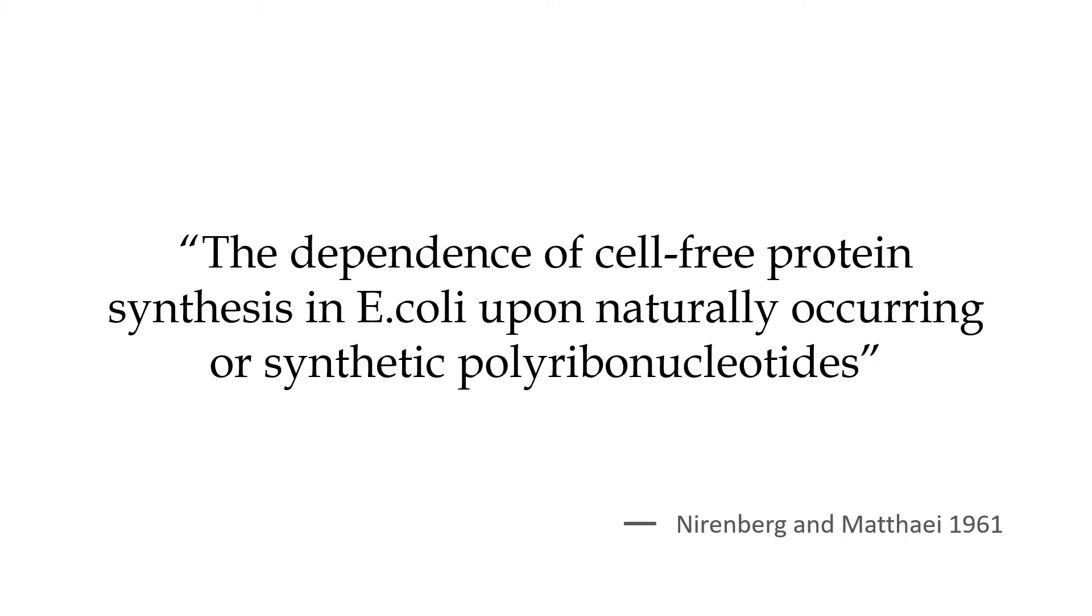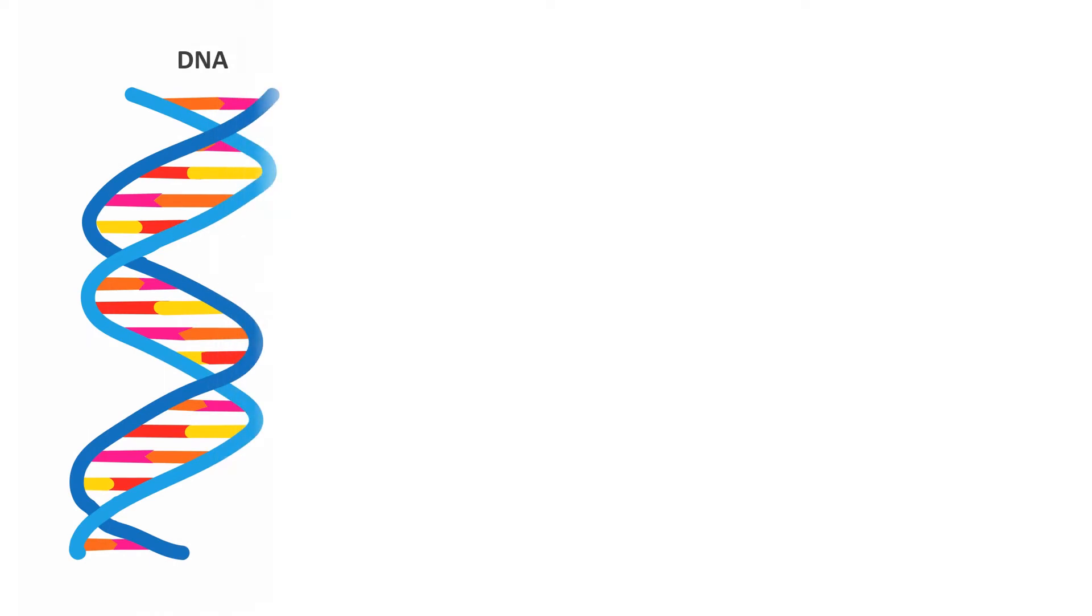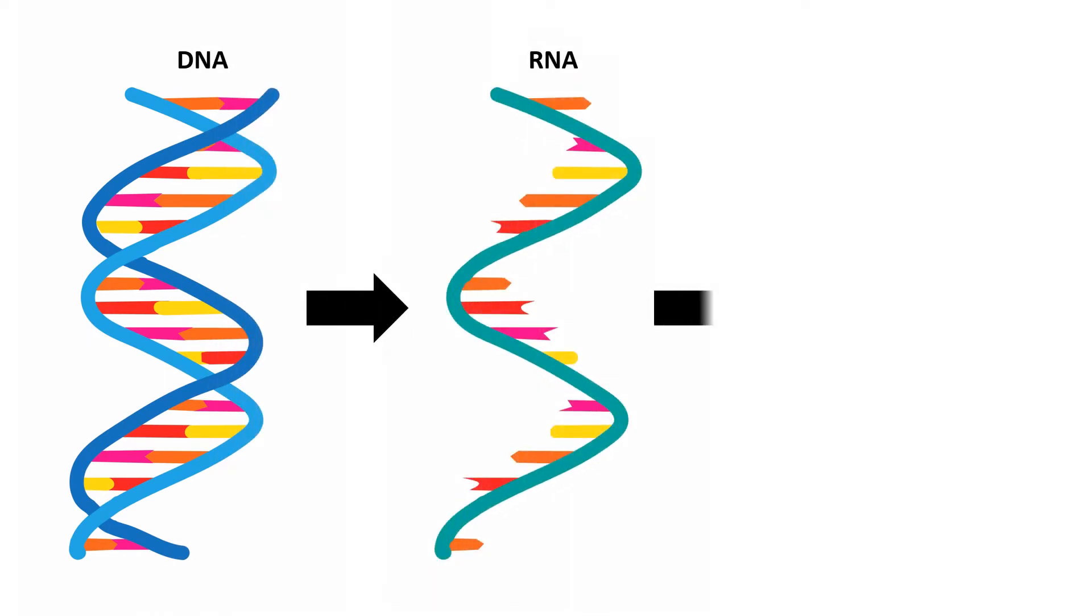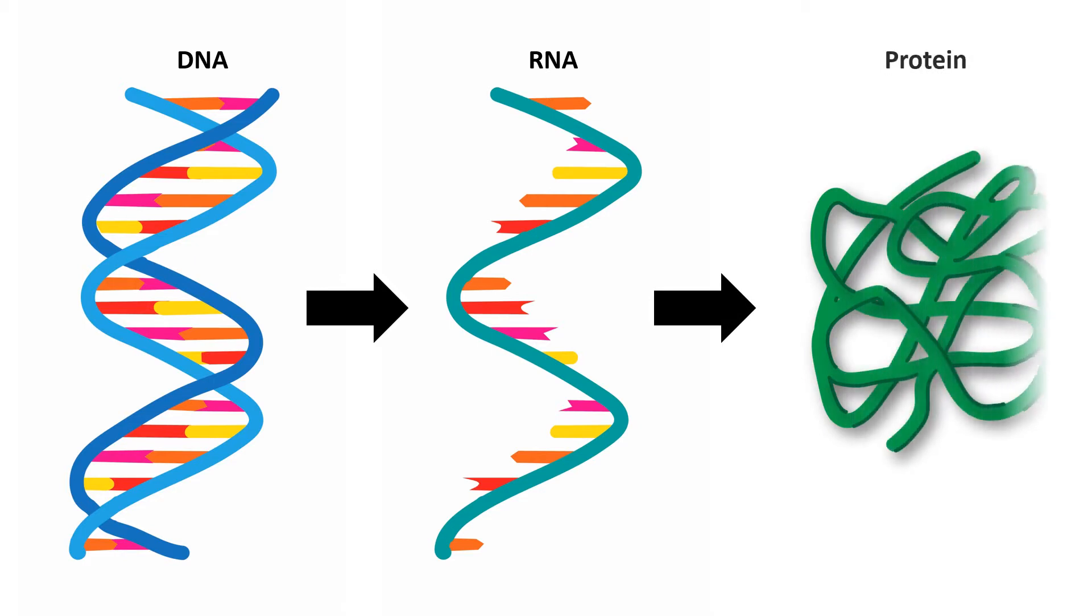The central dogma, as described by Francis Crick in 1957, set the scene for Nirenberg and Matai's work. The central dogma is that information is transferred from DNA to RNA to protein unidirectionally. No information is passed the other way.